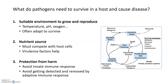Pathogens need environment, food, and also a way to avoid harm within the host — a mechanism that protects them from both the innate or non-specific immune response and detection and removal by the specific or adaptive immune response. Once a pathogen enters the host, it needs to find a good place to grow and reproduce, find food, and be protected. Otherwise it won't be able to efficiently infect the host and ultimately cause disease.